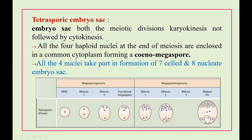This is a coenomegaspore because karyokinesis is not followed by cytokinesis — there is no cell plate formation. The 4 haploid nuclei at the end of meiosis are enclosed in a common cytoplasm, forming a coenomegaspore. This 4-nucleate coenomegaspore then undergoes mitosis and develops into 8 nuclei.